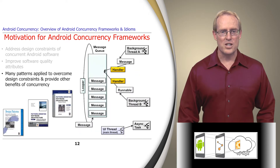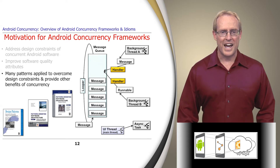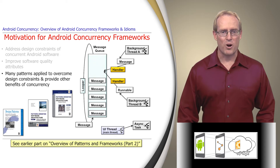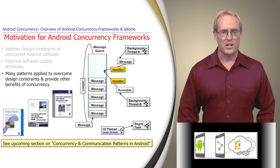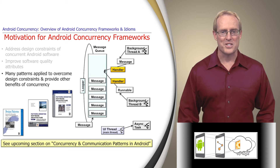As we'll see throughout this module, Android's concurrency frameworks apply many POSA and Gang of Four patterns, including command processor, active object, half-sync, half-async, and strategy, as summarized in an earlier video. A later section in this MOOC will cover these patterns in detail and show how they're applied in Android's concurrency and communication middleware, as well as in applications and services.